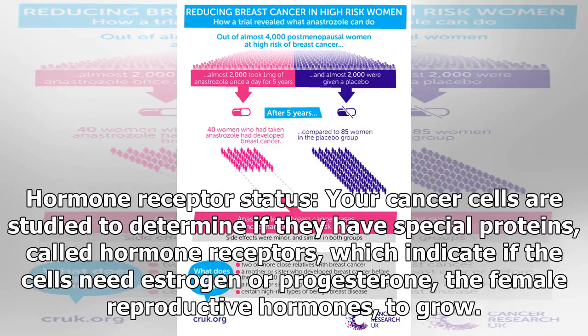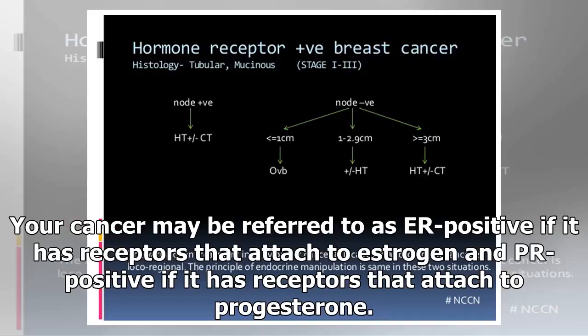Your hormone receptor status will also be considered. Your cancer cells are studied to determine if they have special proteins called hormone receptors, which indicate if the cells need estrogen or progesterone — the female reproductive hormones — to grow. Your cancer may be referred to as ER positive if it has receptors that attach to estrogen, and PR positive if it has receptors that attach to progesterone.